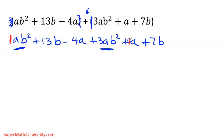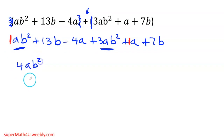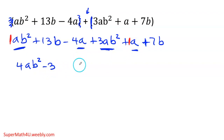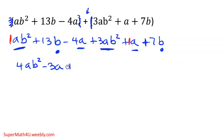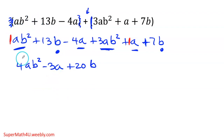Here you have a plus 1a. Combining the ab² terms: 1 plus 3 gives me 4ab². I keep the same variable, same exponent. Now the a's: negative 4 plus 1 is negative 3a. Now the b's: 13 and 7 gives me 20b. First step — get rid of the parentheses; after that, combine like terms.